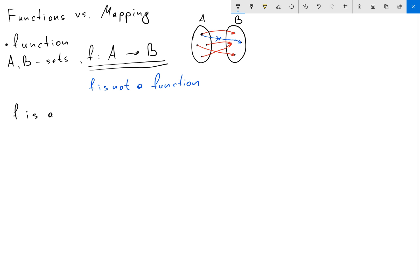f is a function if for any element x belonging to A, there exists a unique element y belonging to B such that y equals f(x).